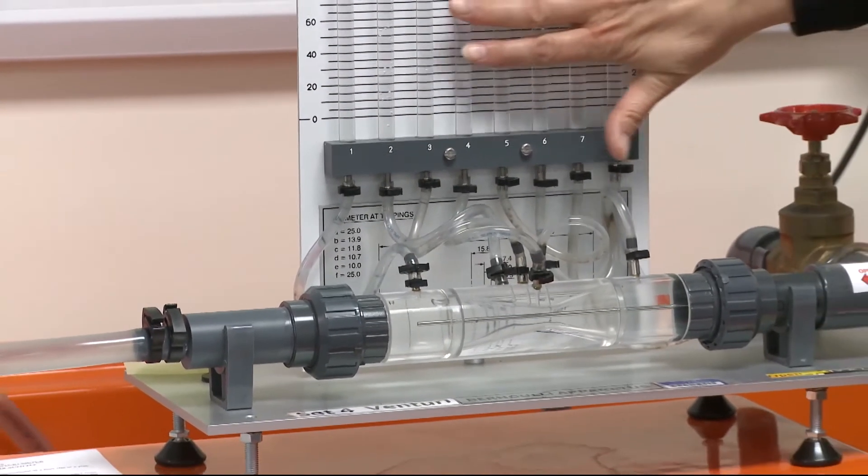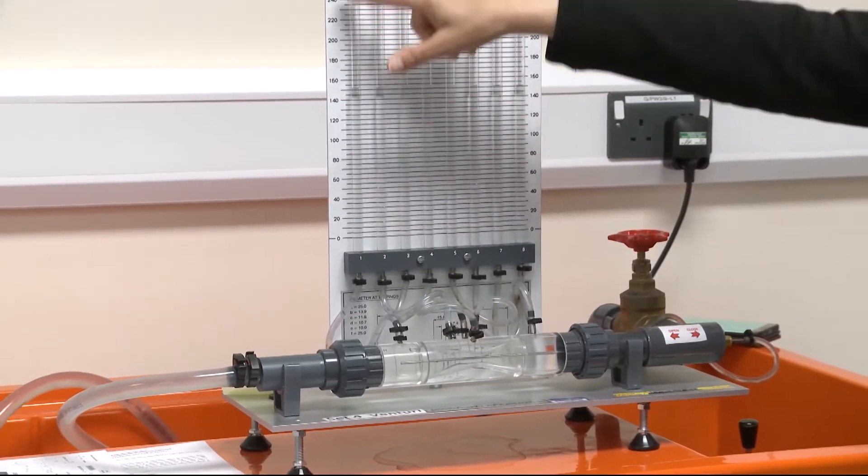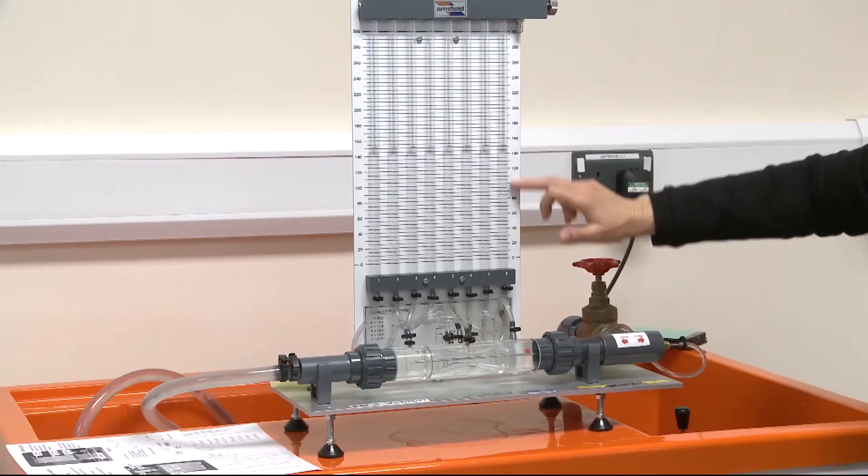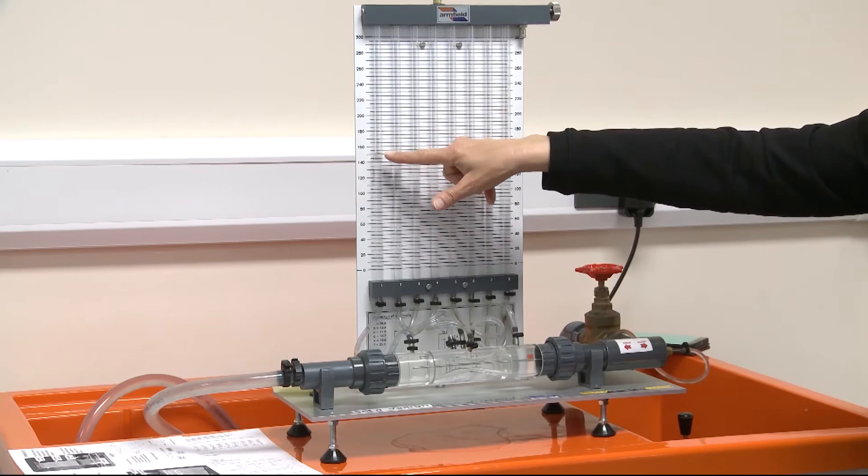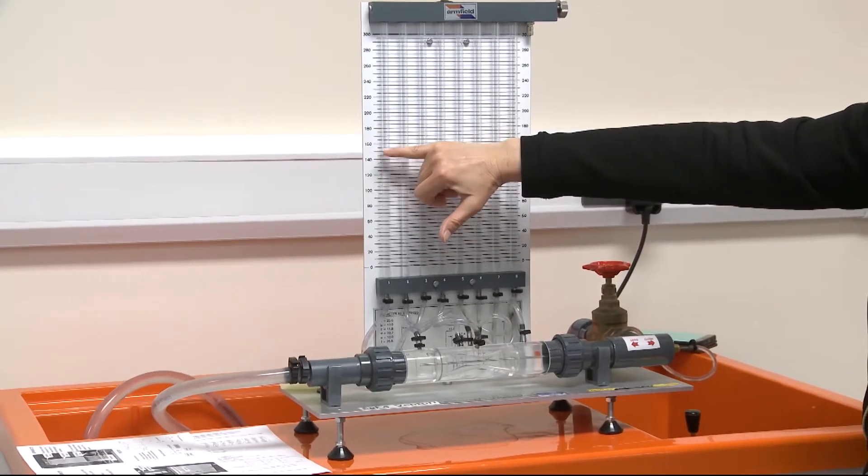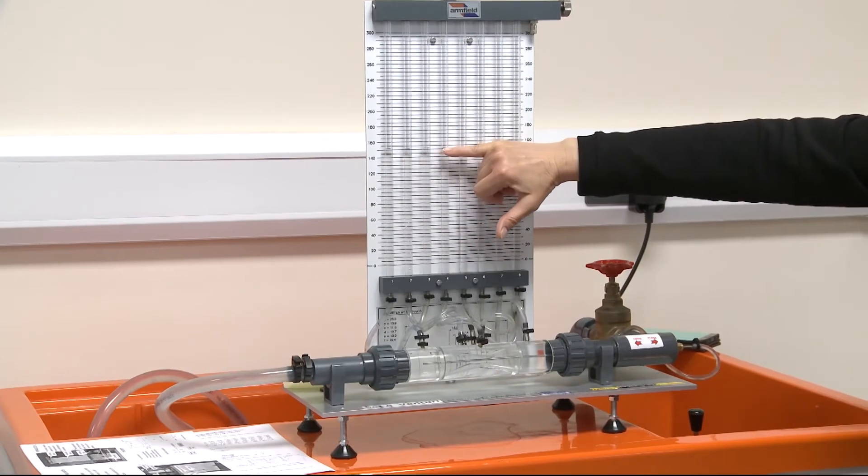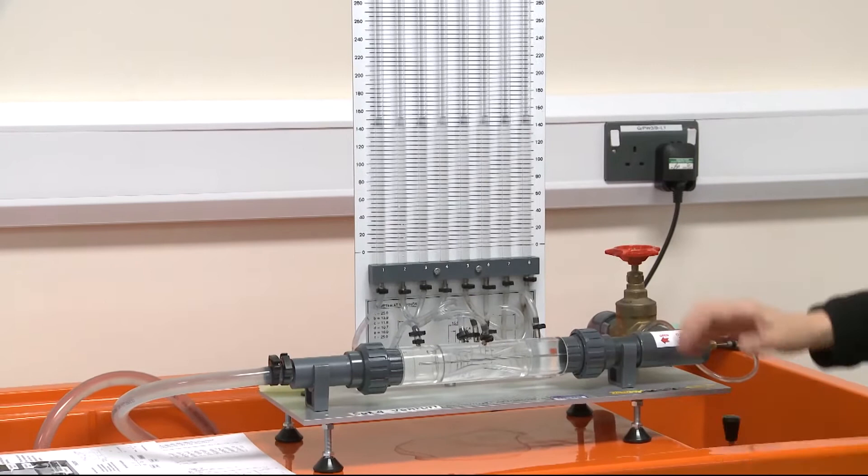These are our piezometric tubes. Behind the tubes, we have measuring rulers, and these measuring rulers we will use to record piezometric head for each of these tubes. At this stage, as you can see, the water level is the same in each of these tubes because we don't have any flow.